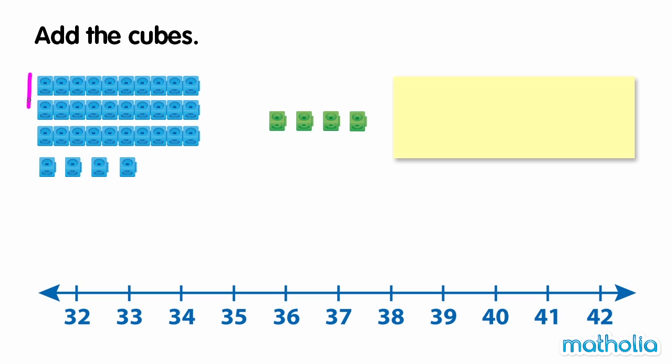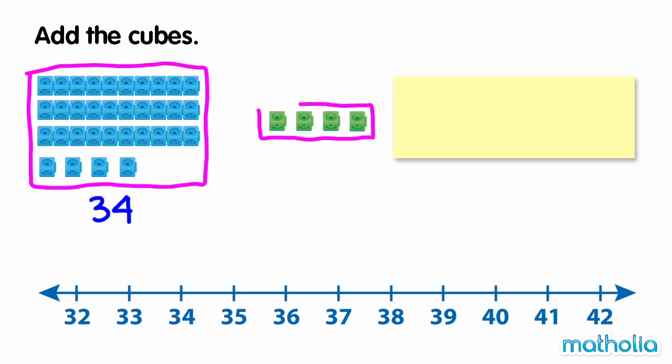Add the cubes. There are 34 blue cubes and there are 4 green cubes. We need to find 34 plus 4.